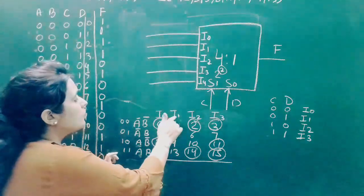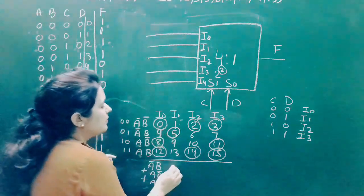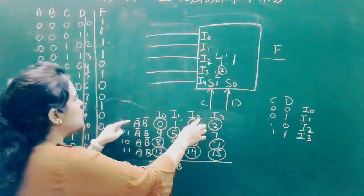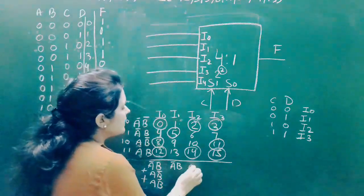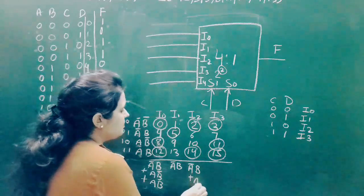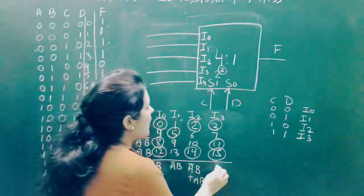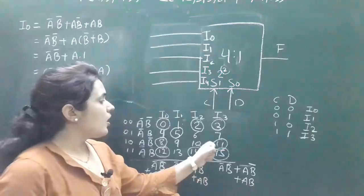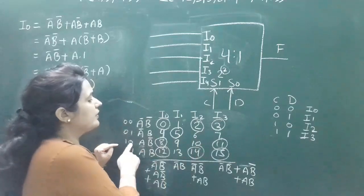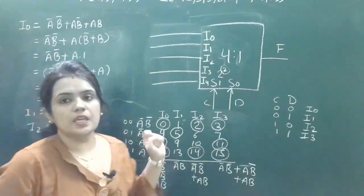For I1, only min term 5 is circled, which belongs to the A'B row, so I1 = A'B. For I2, min terms 2 and 14 are circled, corresponding to rows A'B' and AB, so I2 = A'B' OR AB. For I3, the circled min terms are 3 and 15, also corresponding to A'B' and AB, so I3 = A'B' OR AB.